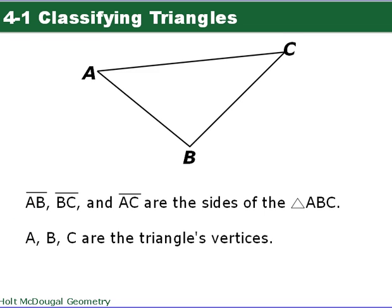All right, so here's triangle AB. AB is one side, BC is a second side, and then AC is our third side. So these are the sides of our triangles. Just a little review here. And the triangle is named using the three vertices. So A, B, C. So this is triangle ABC. You could also call it BCA or CAB, but you have to use all three of the vertices. And as it says here, A, B, and C are the triangle vertices.